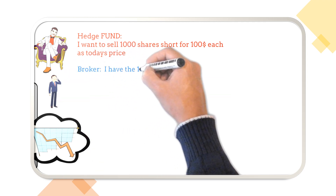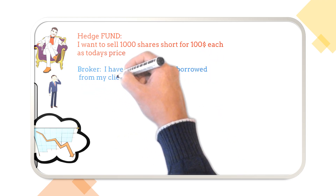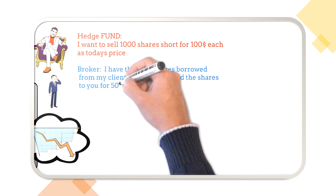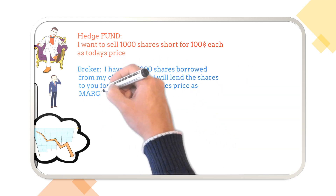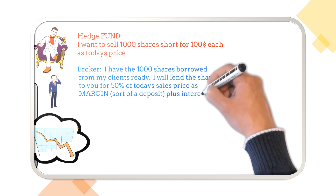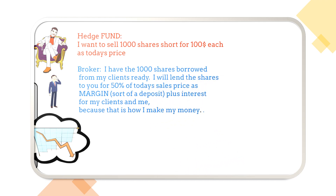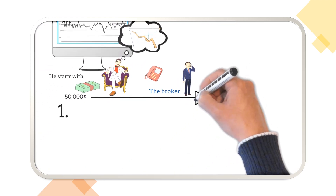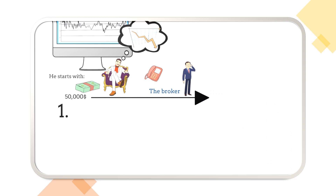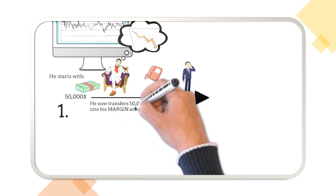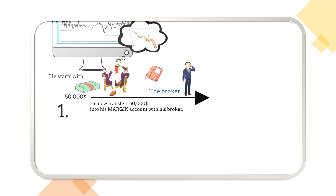The broker tells him he can borrow one thousand shares from his clients and will lend them to our hedge fund manager for fifty percent of today's sales price as margin — this is a deposit for safety — but he has to pay interest to the broker and to his clients for the borrowed shares. To get started, he now has to transfer fifty thousand dollars into his margin account, where they have to stay until he can give back one thousand shares of GameStop.